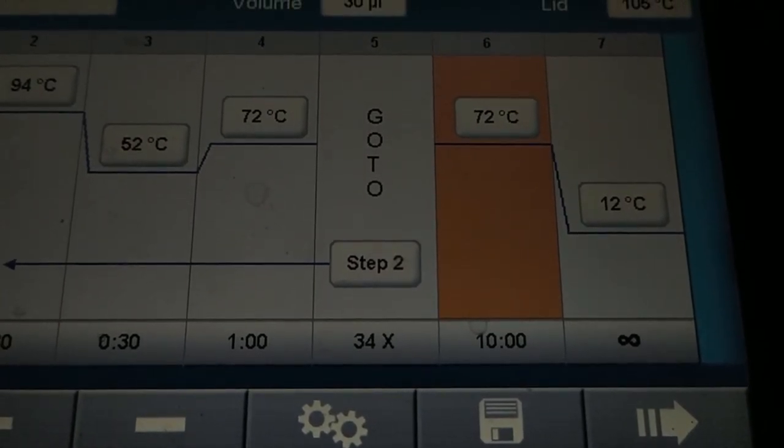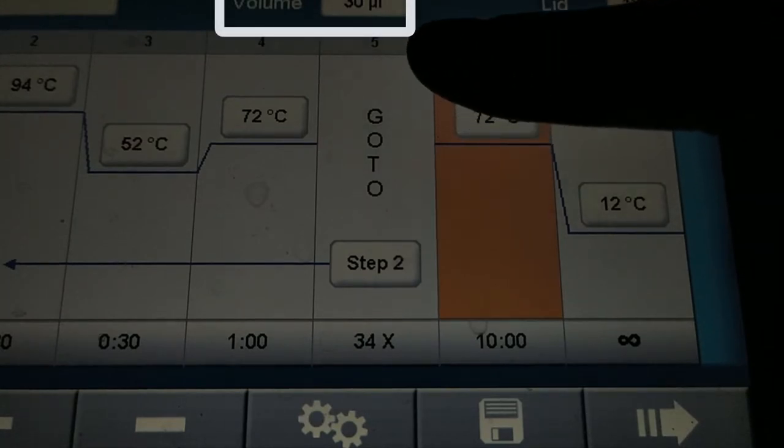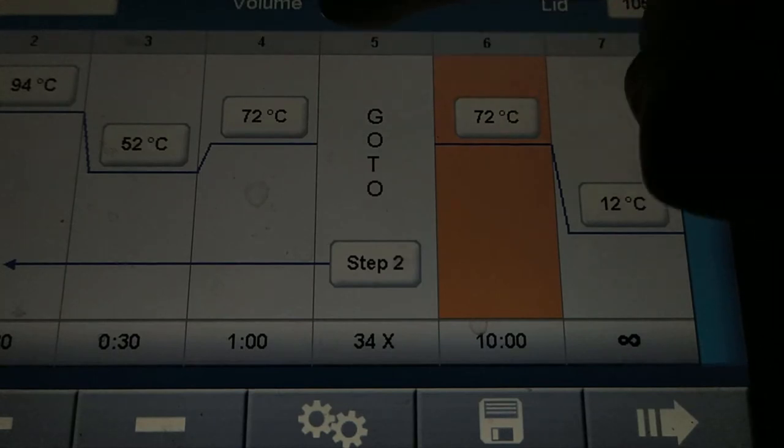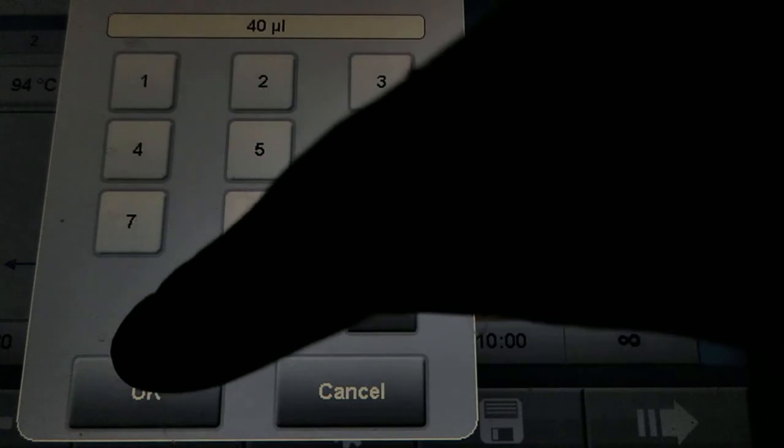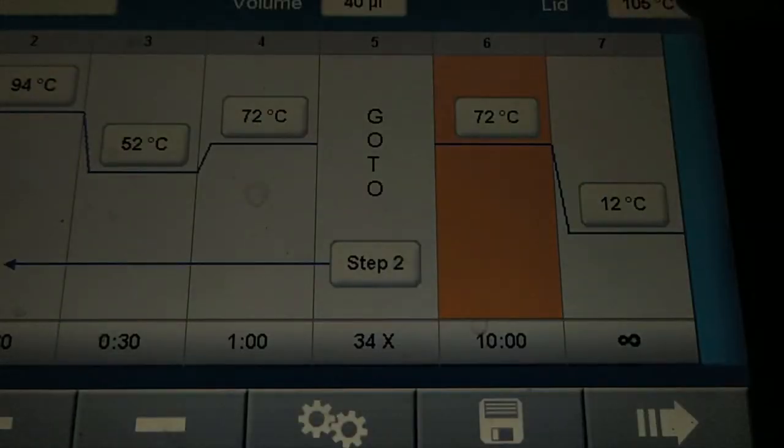Now we need to set the volume of our reaction here so you can find it here. So the volume will be 40. You press on it and set it to 40. And the lid temperature should stay the same so it's 105 Celsius degrees.